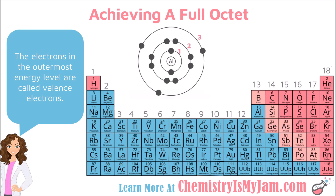Here is the Bohr model for aluminum to help you picture these valence electrons. Aluminum has 3 energy levels. That outside 3rd energy level has 3 electrons. Aluminum is in group 13 — if you take off the 1, you can see that aluminum should have 3 valence electrons.